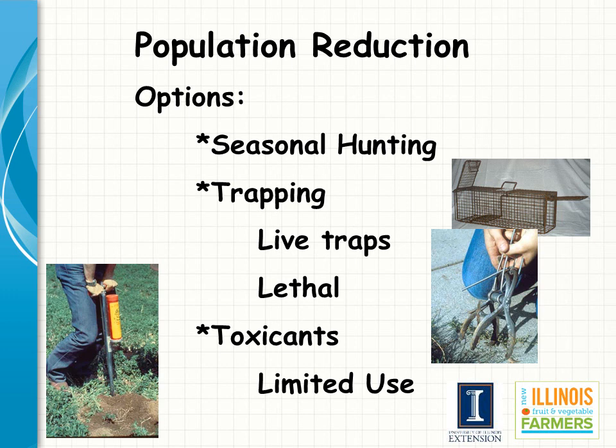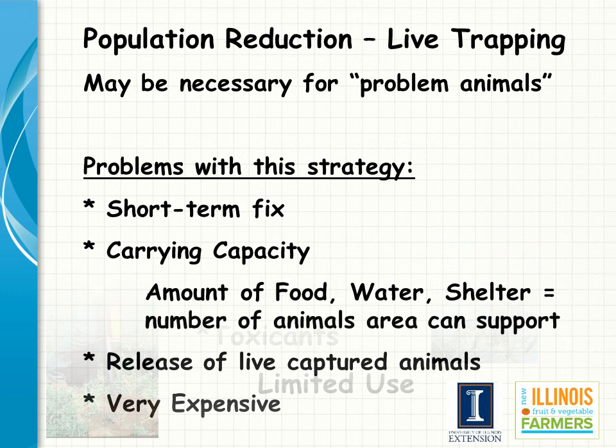The use of a toxicant is not a management option except for small rodents. The picture on the bottom left-hand corner of this slide shows the application of a toxicant for pocket gophers in the plain states. Remember, when using a toxicant, it has to be labeled for that particular species — primarily rodents.